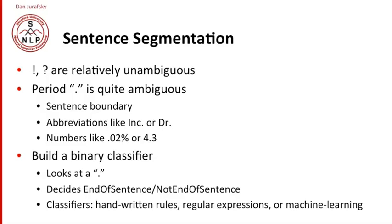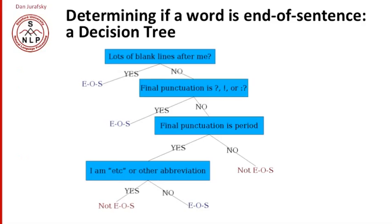And to make this classifier, we could use handwritten rules, we could use regular expressions, or we could build machine learning classifiers. The simplest kind of classifier for this is a decision tree. So here's a simple decision tree for deciding whether a word is an end of sentence or not. A decision tree is a simple if-then procedure that asks a question and branches based on the answer to the question.